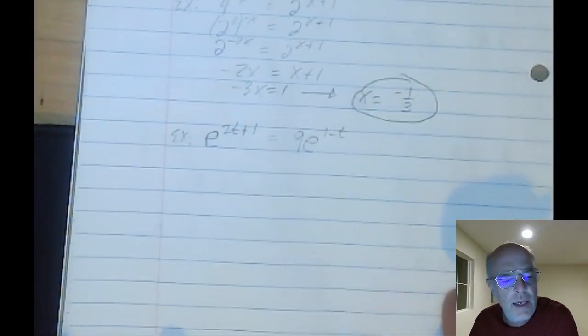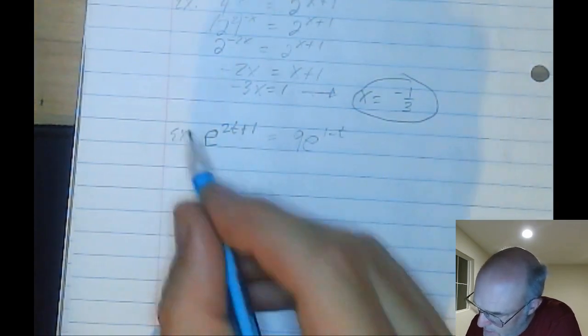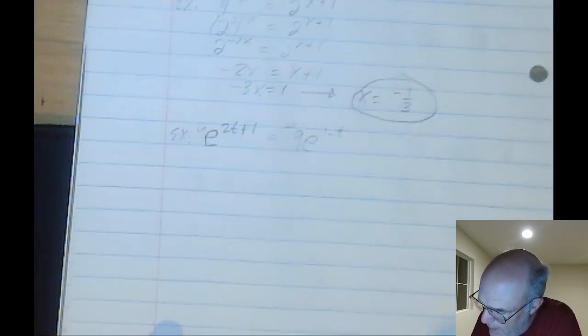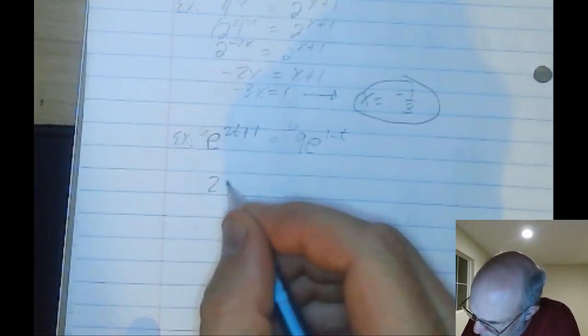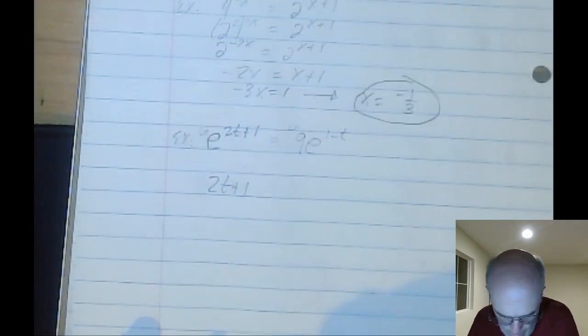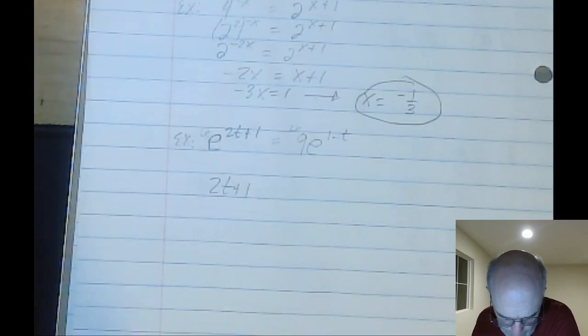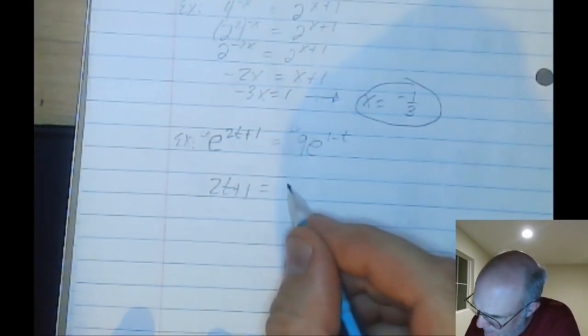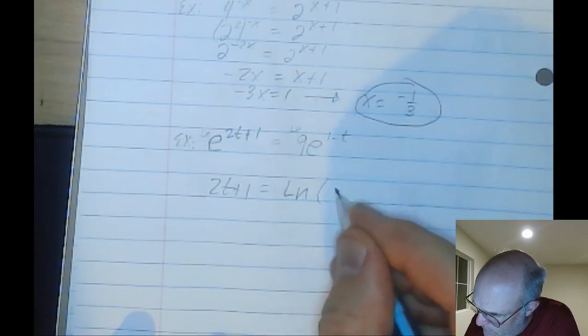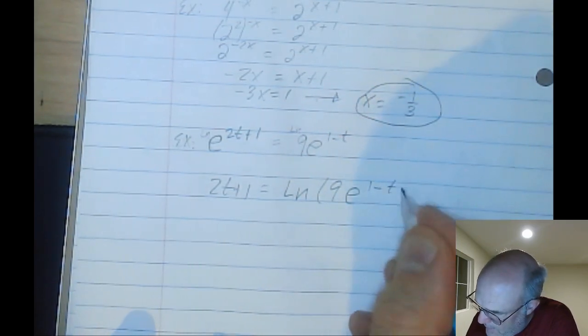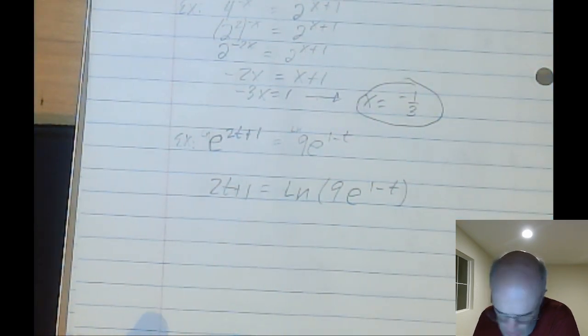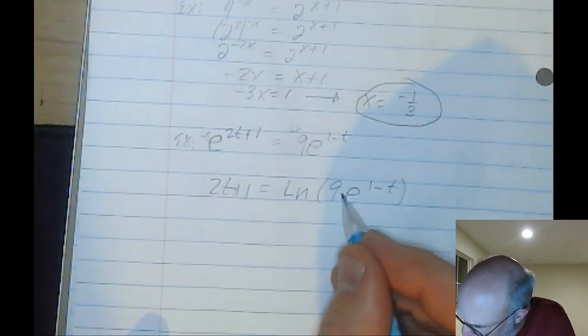So I'm still going to be taking the natural log of both sides. I'm going to take the natural log of each side. Let's see what that looks like. You've got, on the left, you're going to have 2t plus 1. What is it going to look like on the right? It's going to be the natural log of this.